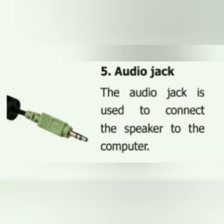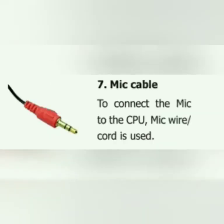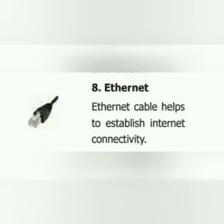Audio Jack: The audio jack is used to connect the speaker with the computer to listen to sound and music. Power Cord: The power cord plays an important role as it connects the appliance to the main electricity supply. Mic Cable: To connect the mic to the CPU, a mic wire or cord is used. Recordings are done with the help of a mic cable. Ethernet: The Ethernet cable helps to establish internet connectivity.